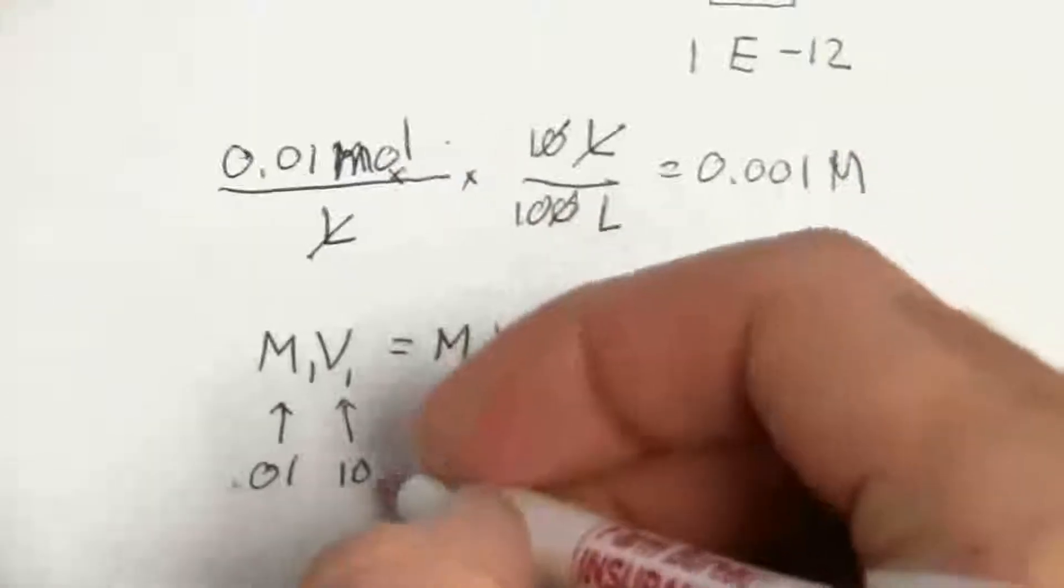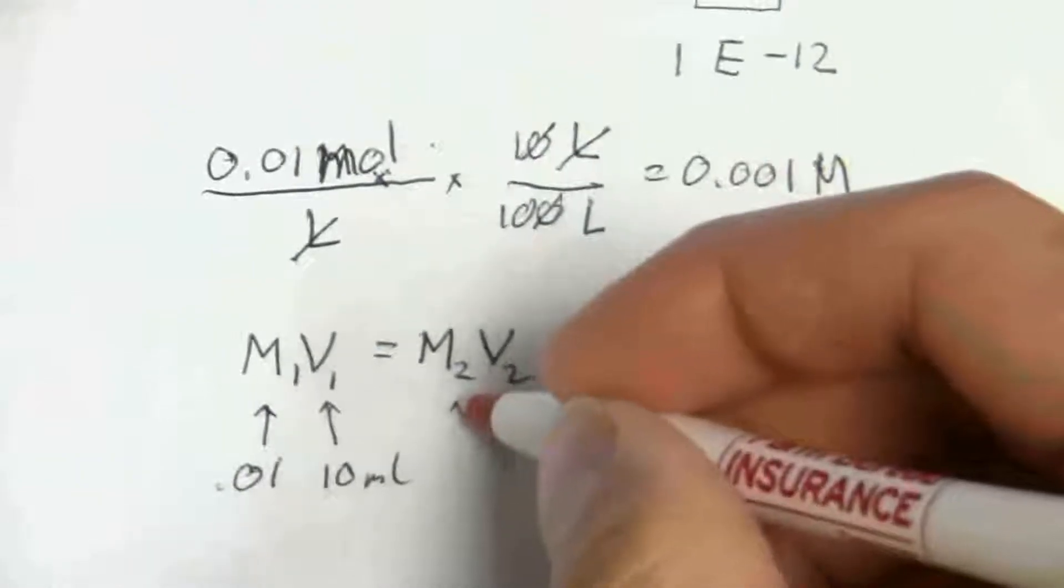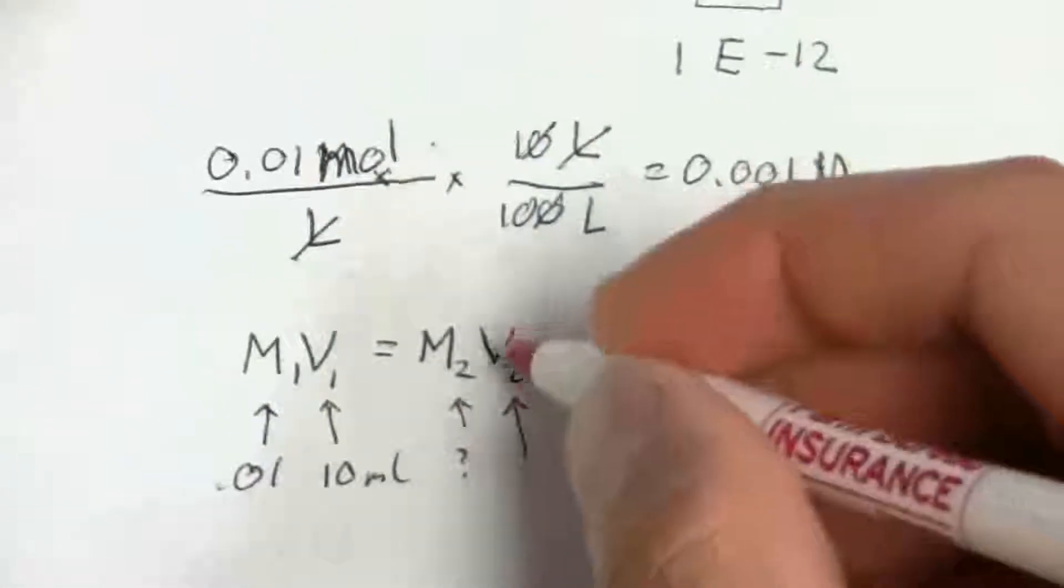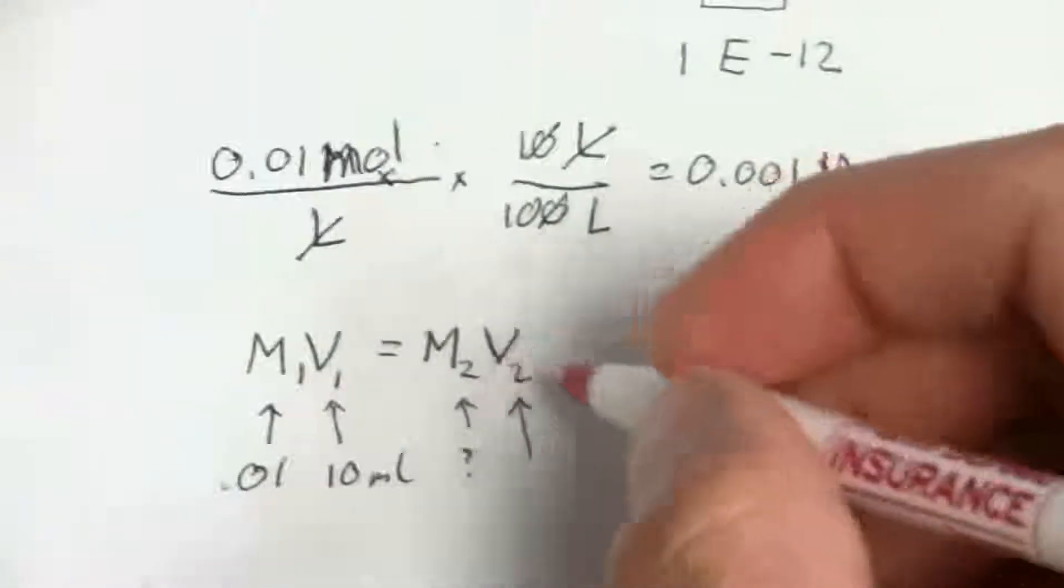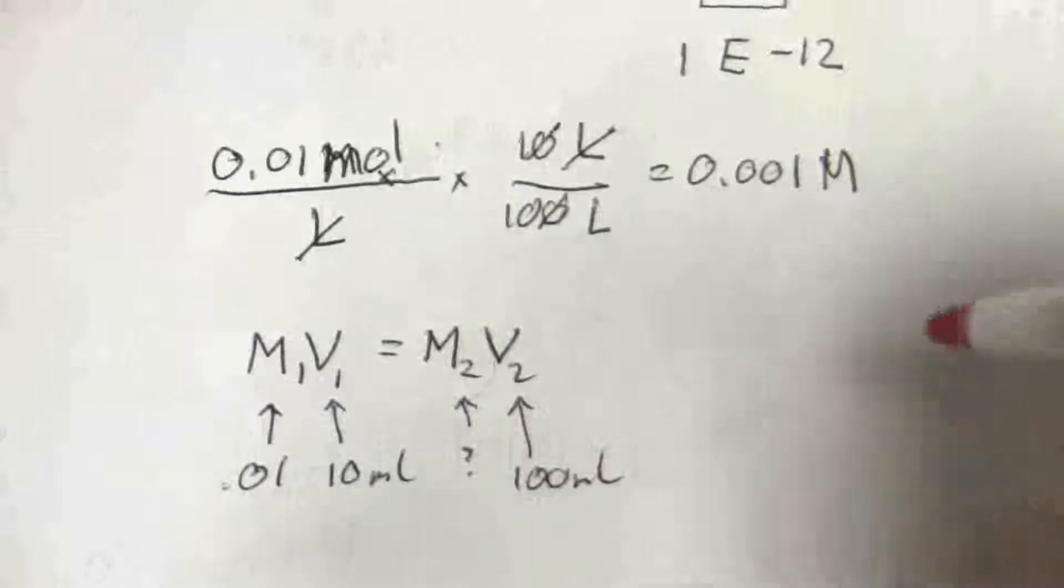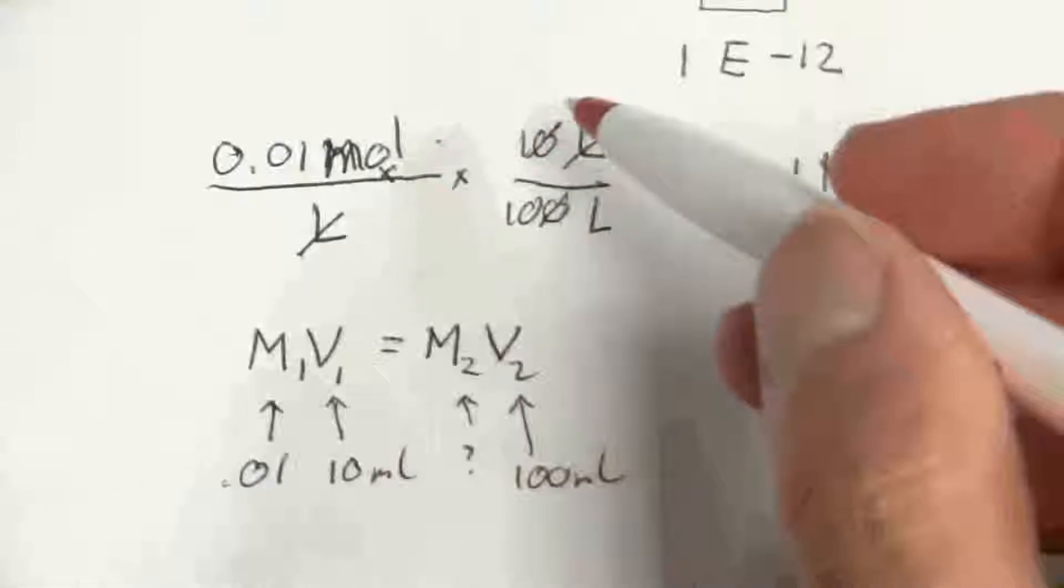Well, I took 10 milliliters. And then this is what I want to find, and here I put in how much did I dilute it to? What's my diluted volume? Well, it was 100 milliliters. So you can see those milliliters, they will cancel each other out.